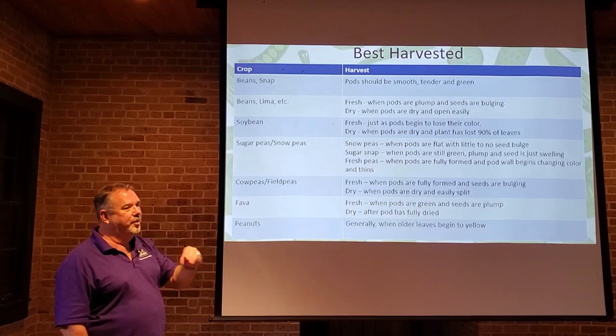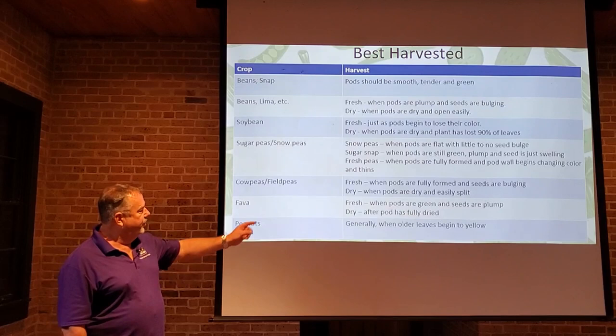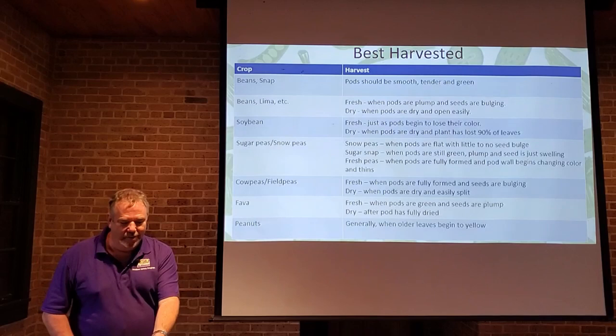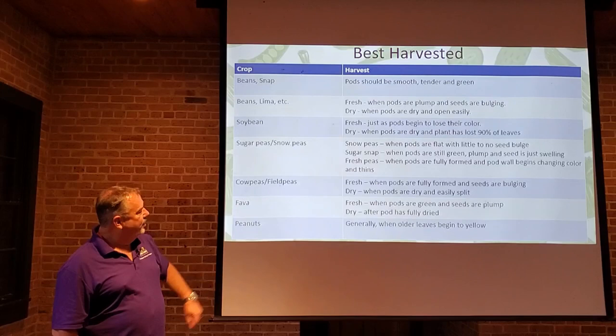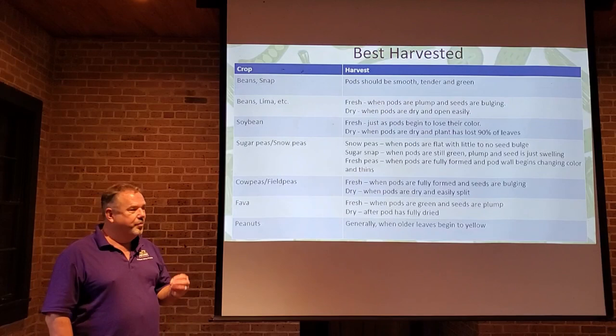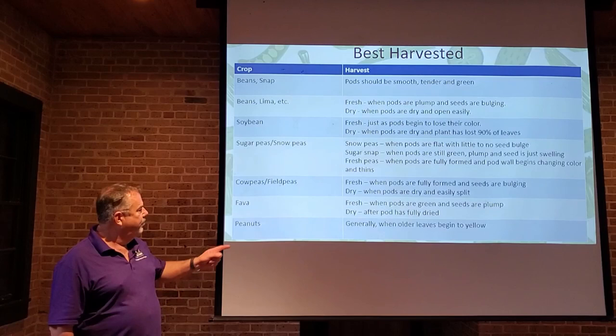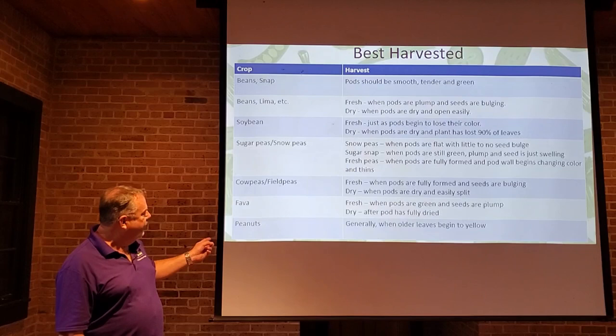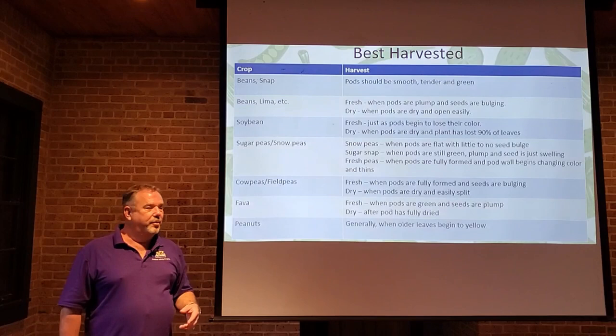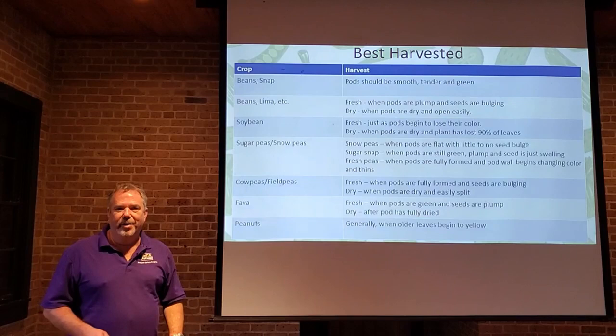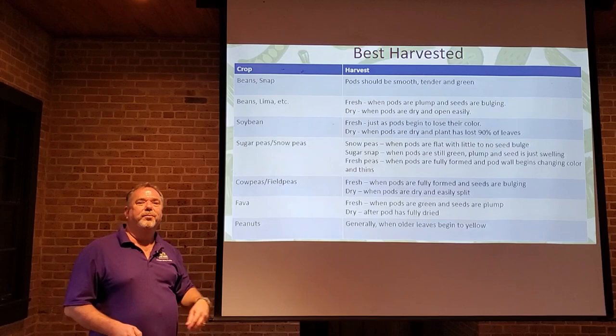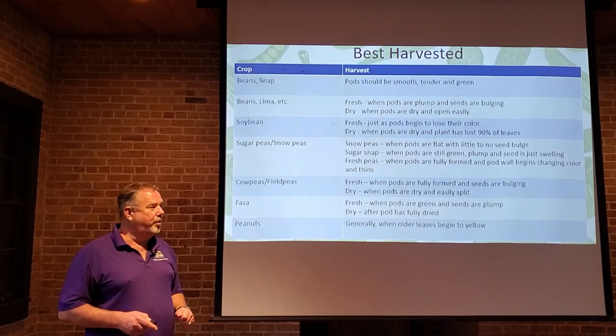Cowpeas and field peas for fresh eating: pods fully formed with seeds bulging — fully open but still nice and soft. For dry, the pods should be dry and will pop open in your hands easily. Fava beans fresh: pods are green and seeds are plump — well developed but still fresh and green. For dry, wait until fully dry. Peanuts: dig them out of the ground generally when the older leaves begin to turn yellow. Do some test digging as you start seeing yellow leaves, and when the peanuts are the size you want, dig them all up.